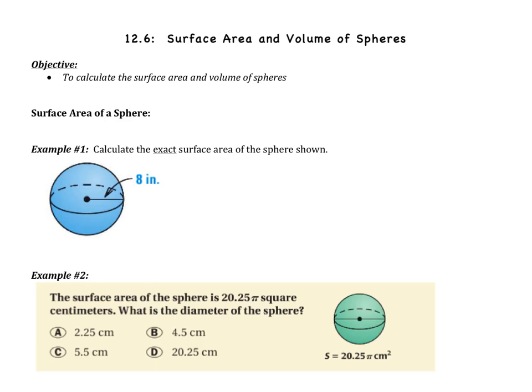Section 6 is about surface area and volume of spheres. So the entire section is about spheres. We've done surface area before, we've done volume before, but now we're doing both surface area and volume of spheres. As you can guess, our objective is to calculate the surface area and volume of spheres.